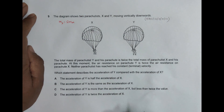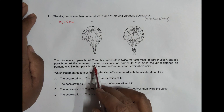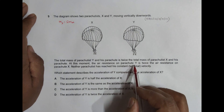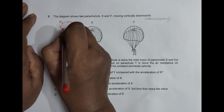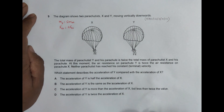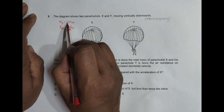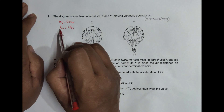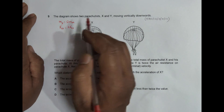At this moment, the air resistance on parachutist Y is twice the air resistance on parachutist X. So the opposing force on Y is twice the opposing force on X. We have two given conditions: mass of Y equals twice mass of X, and the opposing force on Y equals twice the opposing force on X.